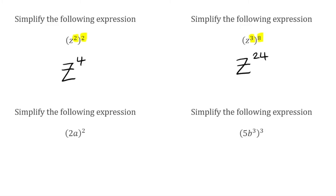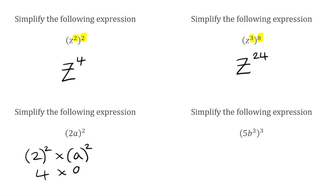For this next question, we've got 2a in the bracket, which we're then raising to the power of 2. We've got a coefficient in front of our term, so we have to apply that power of 2 to everything inside the bracket. Breaking it into separate brackets: 2 to the power of 2 is 4, and then we multiply by a to the power of 2, which is a squared. Putting it together, we've just got 4a squared.